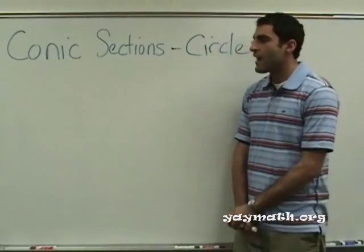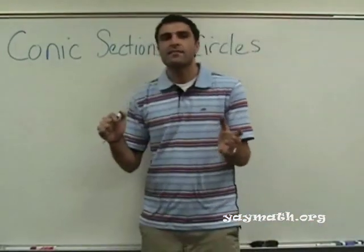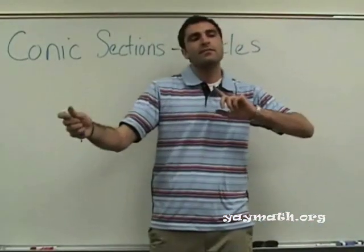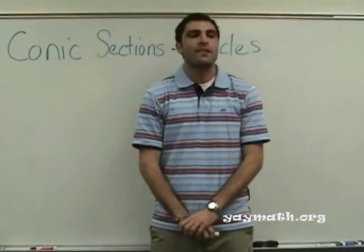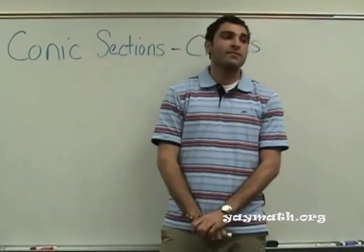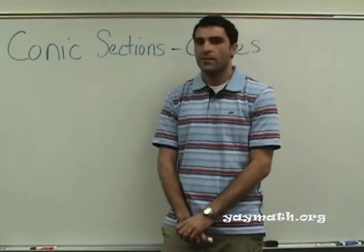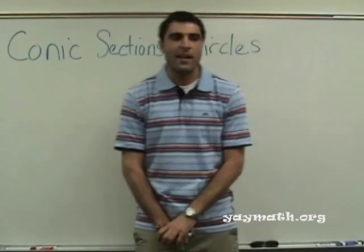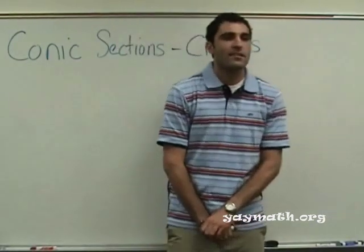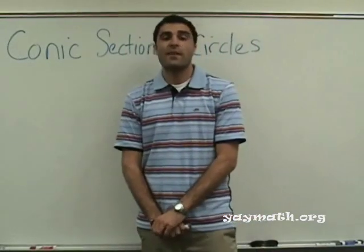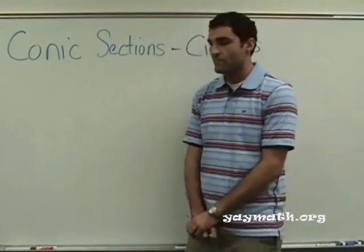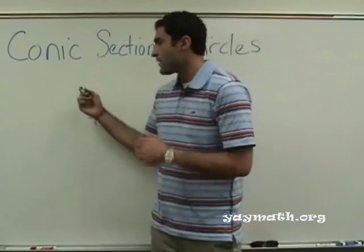Remember with the parabola, we had x and y. Which one was squared, or both, or neither? X is squared, or Y is squared. So one of them was squared, correct? Any guesses about what happens with the circle? They're both squared because they make a circle. Both are squared.